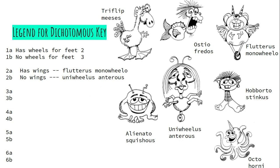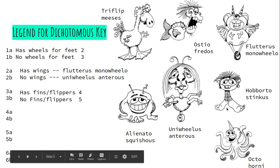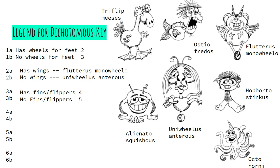Now I have to go back to question three — no wheels for feet. I'm going to look at all the other organisms that have no wheels: Triflip, Osteo, Alienado, Huberto, and Octo. Looking at them, I notice that some have fins and flippers and none of the others do — they have feet or tentacles. So I'm going to use fins and flippers as my distinguishing factor for question three. The ones with fins or flippers move to question four, and those without move to question five.